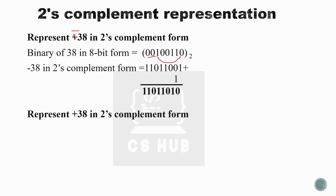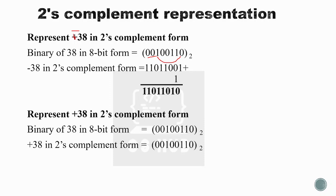For plus 38 in two's complement form, since the number is positive, the representation is simply the 8-bit binary equivalent of 38. No complement is needed — the binary equivalent itself is the two's complement representation.